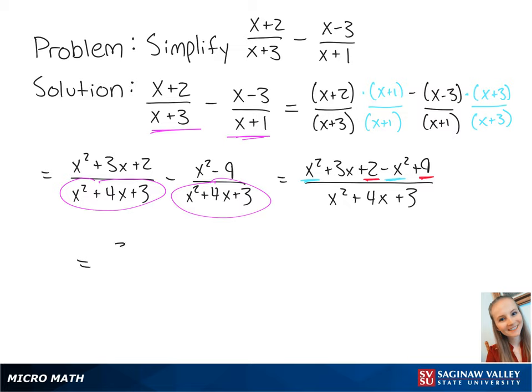When we combine the like terms, this finally gives us 3x plus 11 all over x squared plus 4x plus 3. This is the final answer.